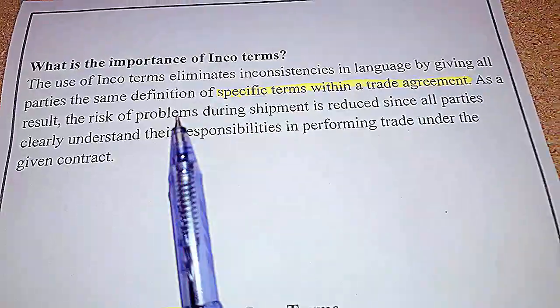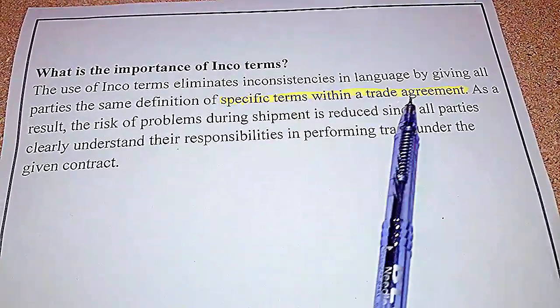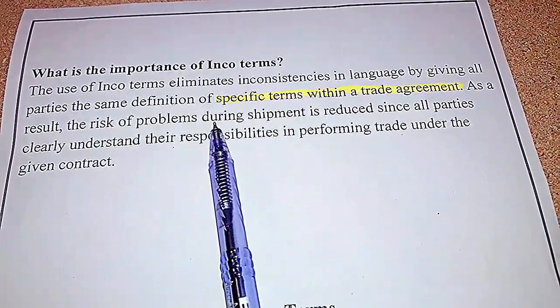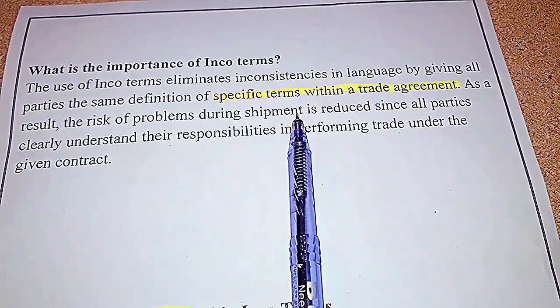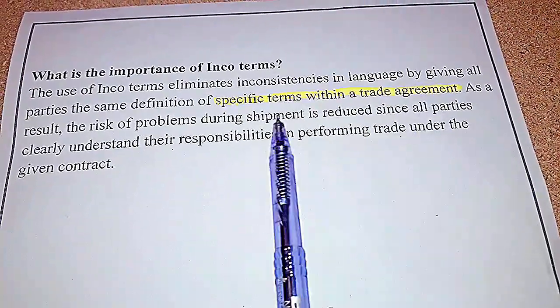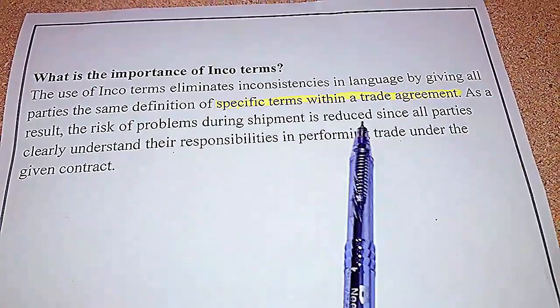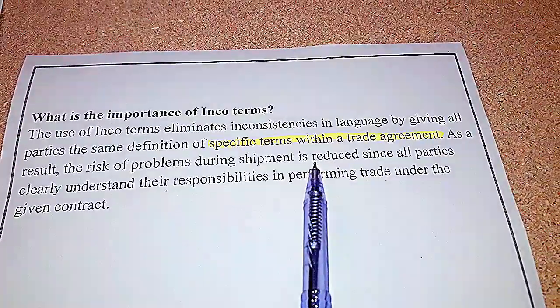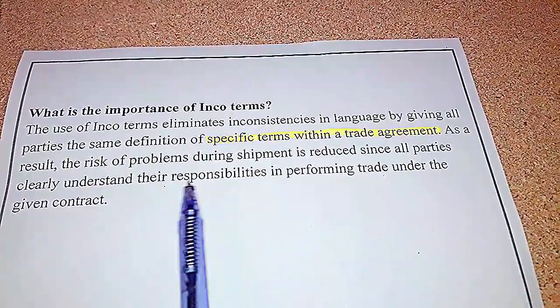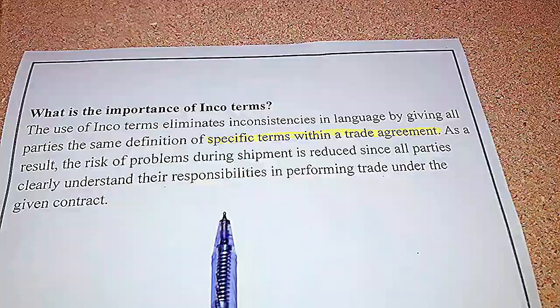Next, we will discuss the importance of Incoterms. Incoterms eliminate inconsistencies in language by giving all parties the same definition of specific terms within the trade agreement. As a result, the risk of problems during shipment is reduced, since all parties clearly understand their responsibilities in performing trade under the given contract.